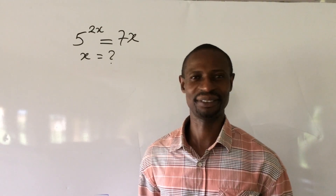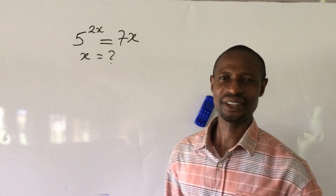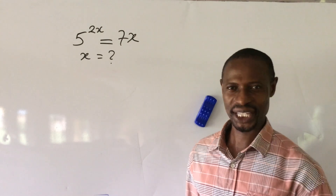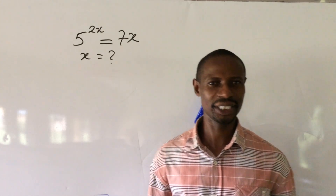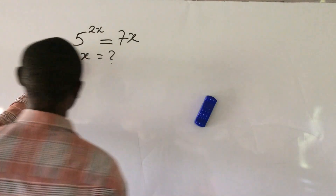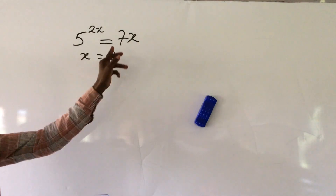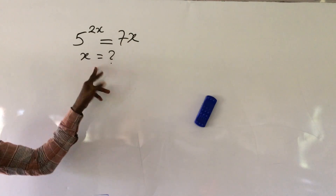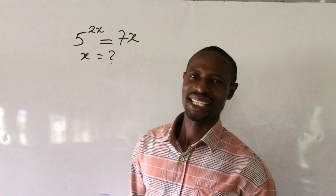Welcome everyone to my channel. Today we have a challenge on the board: how to solve an exponential equation using the Lambert W function. The problem reads: 5 to the power of 2x equals 7x. What would be the possible value of x?